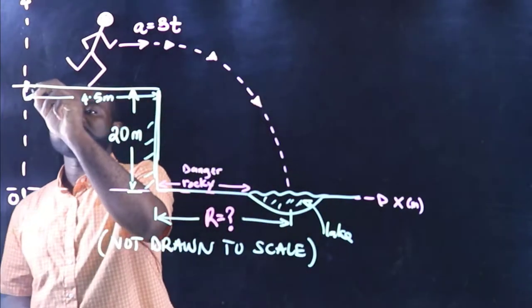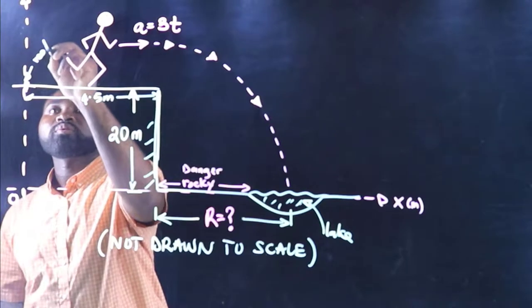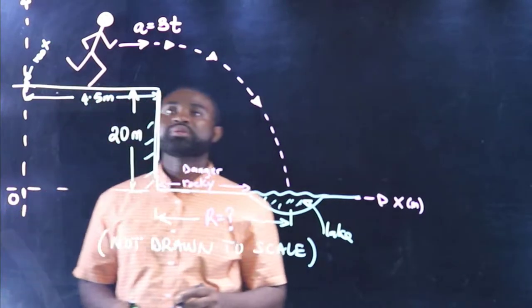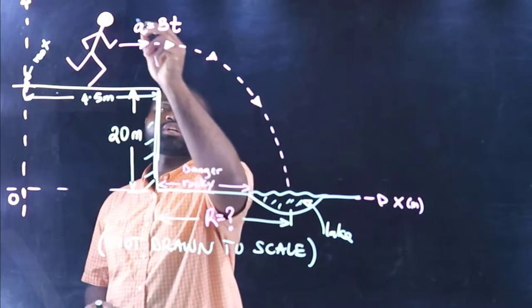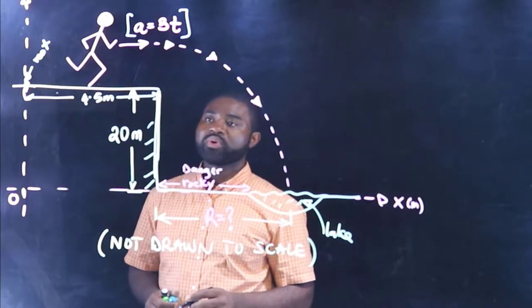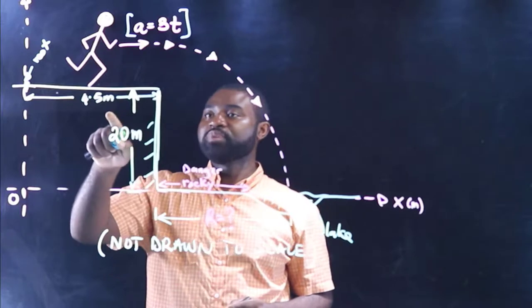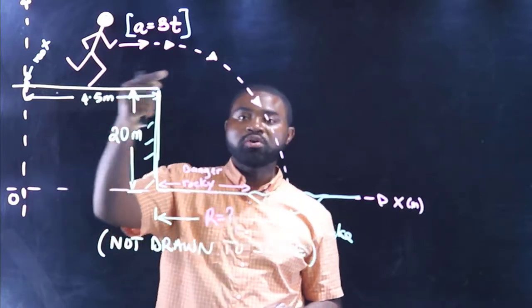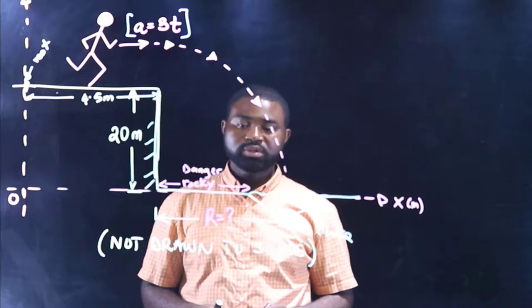He runs a lap of 4.5 meters before jumping off a cliff. So the fundamental question is: what is the distance that he has to jump R so as to avoid this rocky dangerous portion?